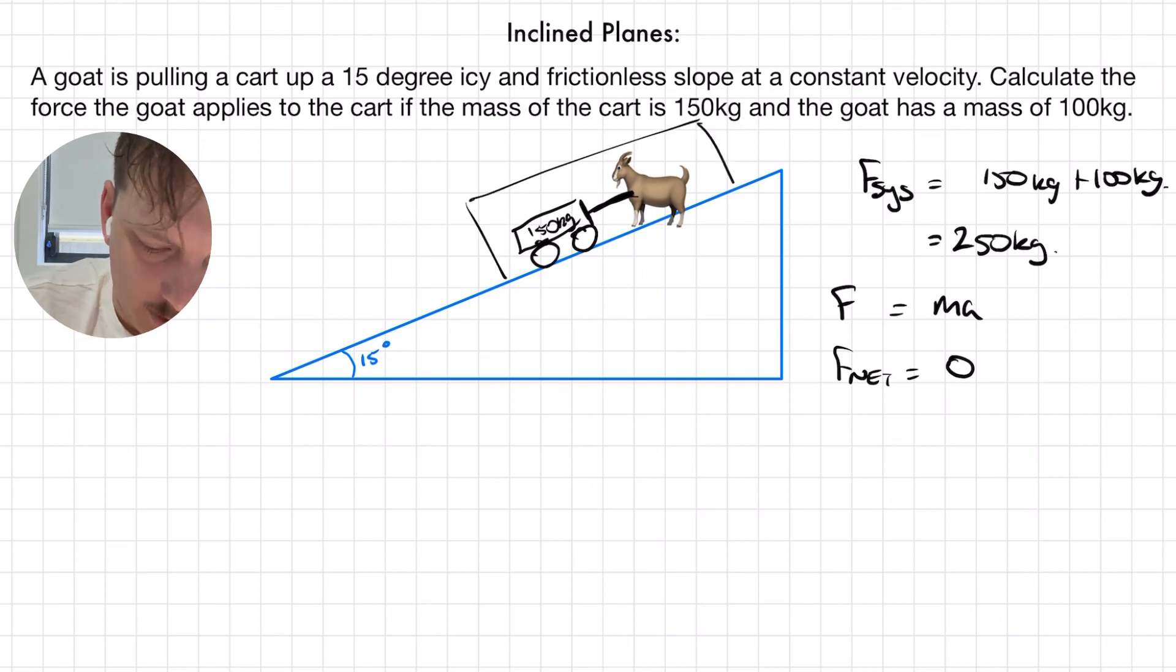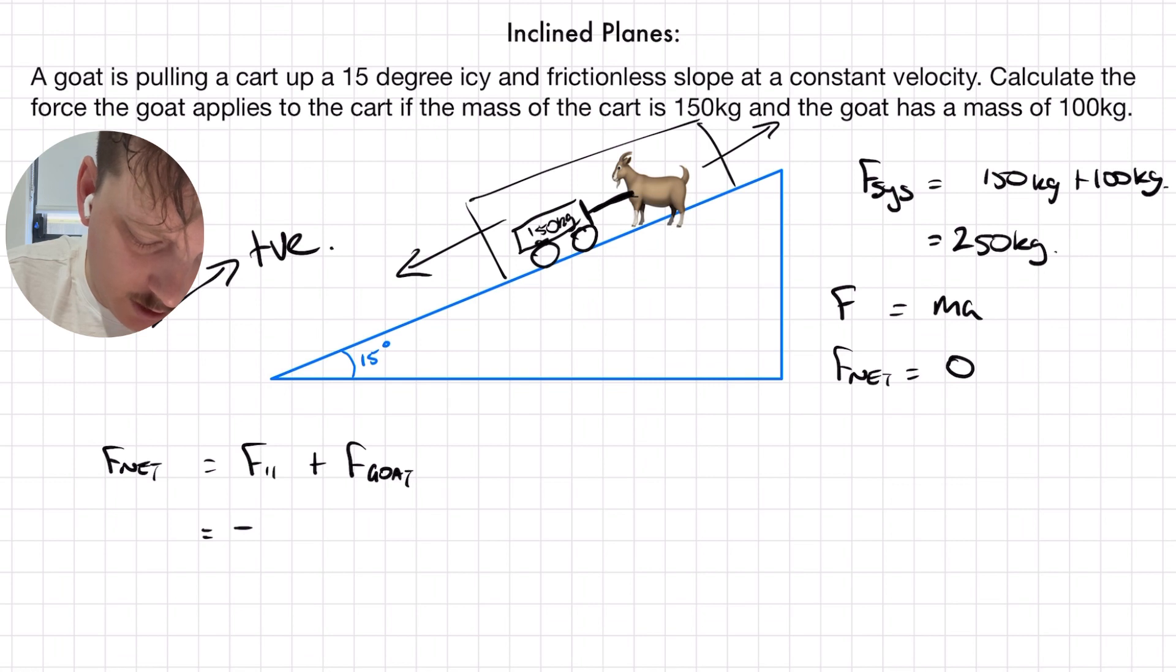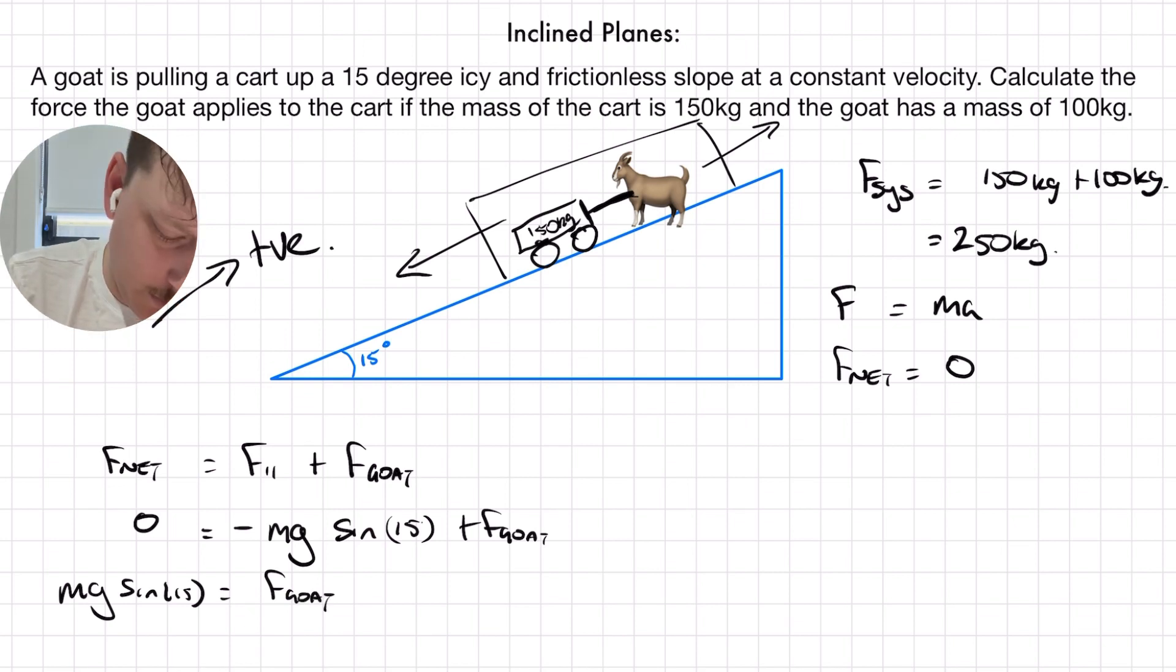All right. In this case here, we have the system experiencing a force down the slope and the goat is going to apply a force up the slope. So, f net is going to equal f parallel plus f goat. And I'm going to say that the goat is pulling in a positive direction. That means our parallel force is negative mg sine of 15 and the force of the goat is positive. And that's going to sum together to get zero. Rearranging, I can say that mg sine of 15 is equal to the force of the goat, or 634 newtons of force.